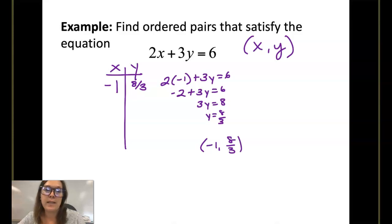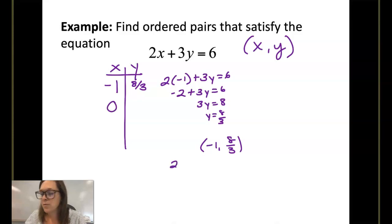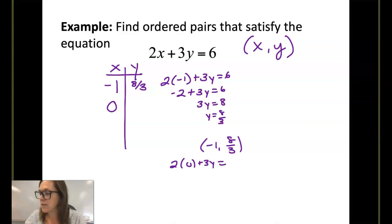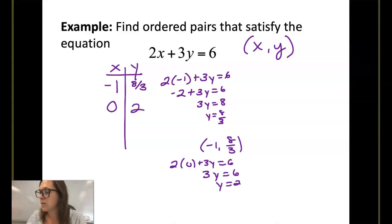What if we chose 0? 2 times 0 plus 3y is equal to 6. So 3y is equal to 6, y is equal to 2. So there's another ordered pair: 0, 2.